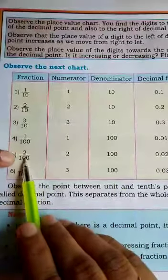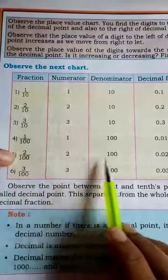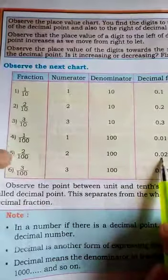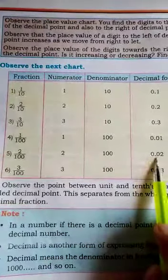In the case of 100, 2 by 100, numerator 2, denominator 100, then decimal form is not 0.2, it's 0.02.